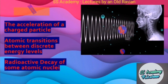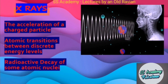Next comes X-rays. X-rays are produced by the acceleration of a charged particle, by atomic transitions between discrete energy levels, and by radioactive decay of some atomic nuclei. They are detected by photographic plates, films, rare earth screens, photostimulable phosphors (PSLs), and Geiger counters.